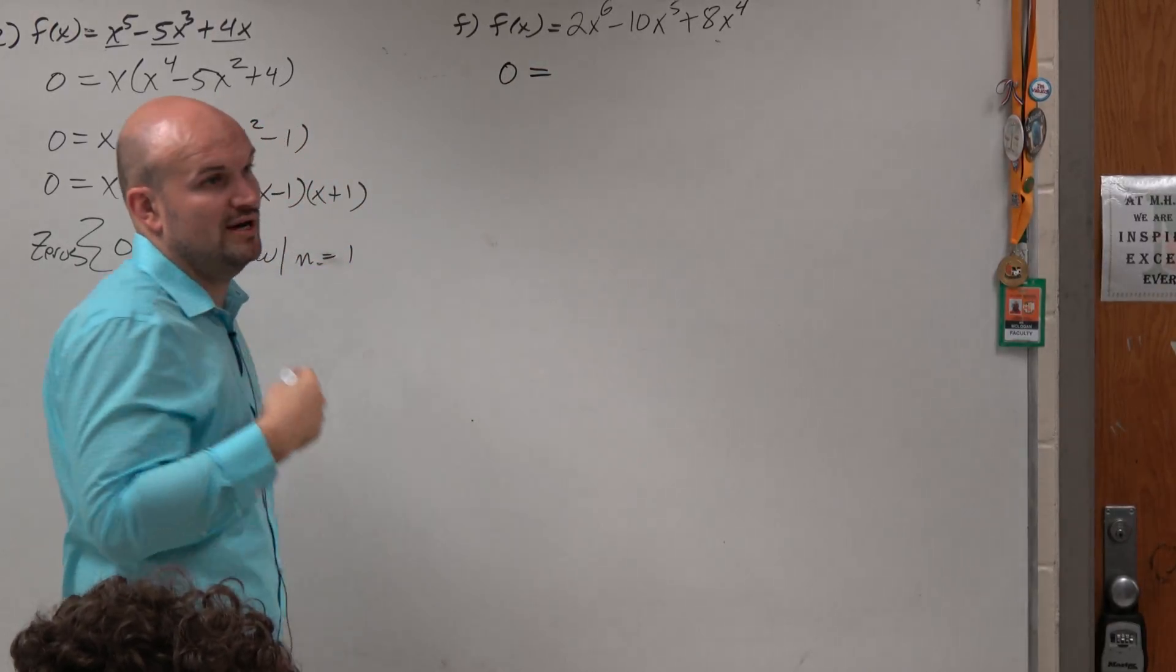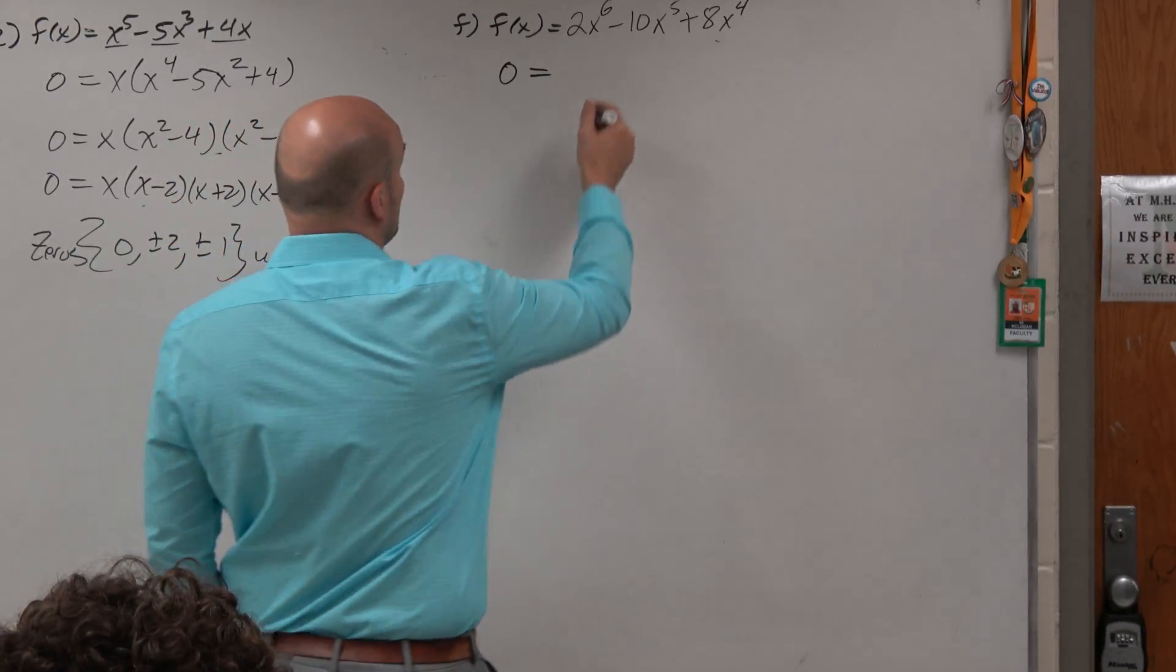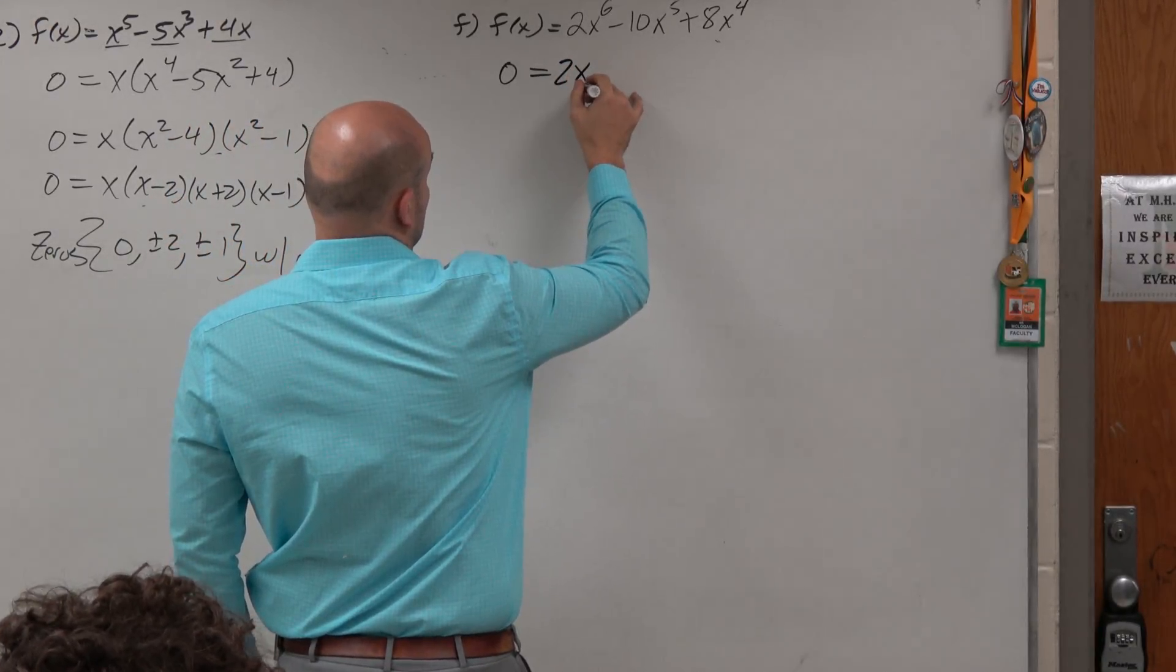And then I try to see, well, what number or variables can I factor out that they share? And you could say 2x to the 4th.